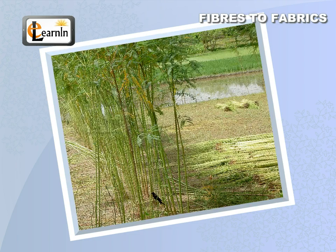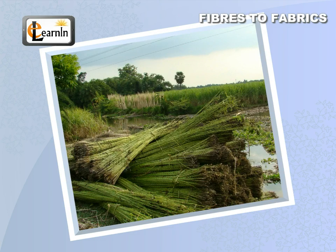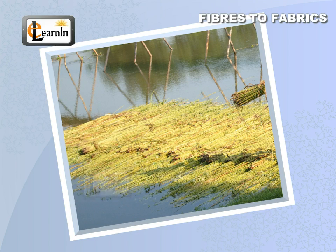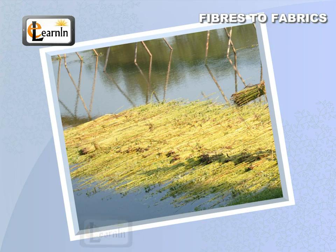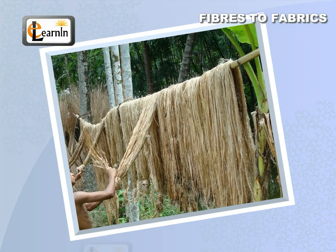Jute. The cultivation of jute plants is done in rainy seasons. Jute fiber is derived from the stem of the jute plant. When the plant is at its blossoming stage, it is harvested and then the stem is submerged in water for a few days. After this, the separation of the stem rot and fiber is done by hand.